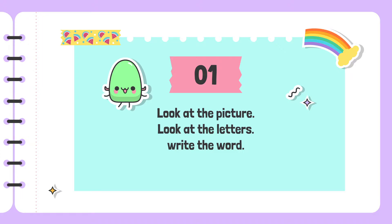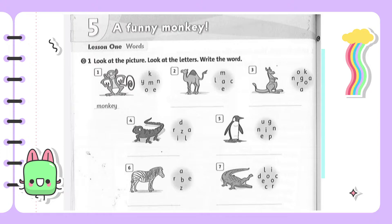For exercise one, look at the picture, look at the letter, write the word. You have seven pictures and you will write the matching word under each picture. For example, picture number one — what is this animal? It's a monkey. You write the word 'monkey' under picture one. Do the same for pictures two, three, four, five, six, and seven. Now let's check the answers.